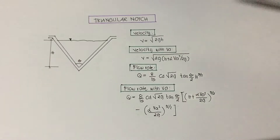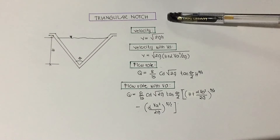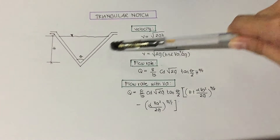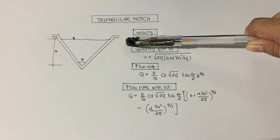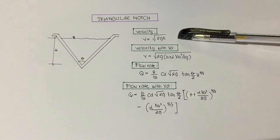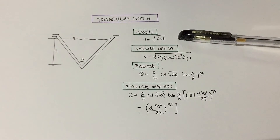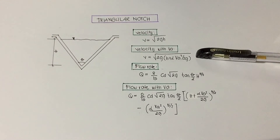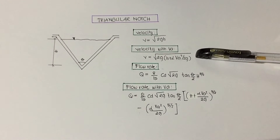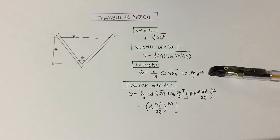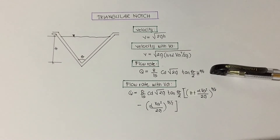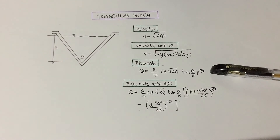The triangular notch has a triangular opening and is well suited to measuring small flows with high accuracy. The formula for velocity is equal to the square root of 2 times the acceleration due to gravity times height. The velocity with velocity approach is equal to the square root of 2g times the quantity of h plus the Coriolis coefficient times va squared over 2g. The formula for flow rate is equal to 8 over 15 times the coefficient of discharge times the square root of 2g times tangent of theta over 2 times height to the power of five-halves.